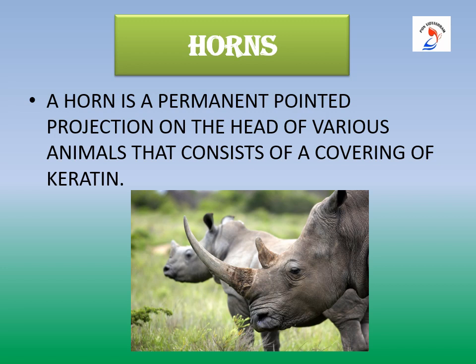Next we will see about horns. In the picture you can observe a rhinoceros with a strong sturdy horn. A horn is a permanent pointed projection on the head of various animals that consists of a covering of keratin. Usually we think horns are used for protection — yes, and now horns are even used to make ornaments.